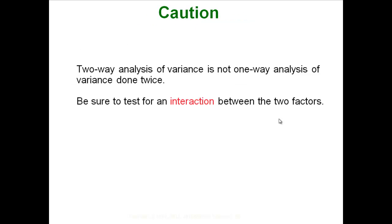One last caution: remember you have to test for that interaction first. If there is an interaction, you cannot determine if one or the other factor is actually causing an effect — if the row and column factors are working together, you can't tell if it's just the row or just the column having an effect. So always test for interaction first, both by running the numbers and by looking at the graph.